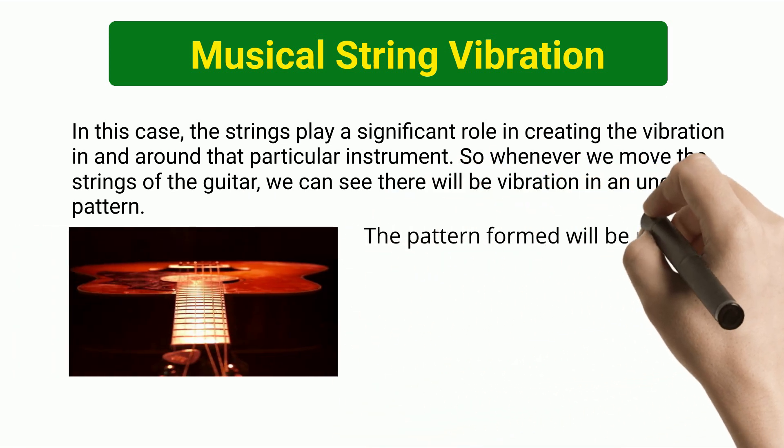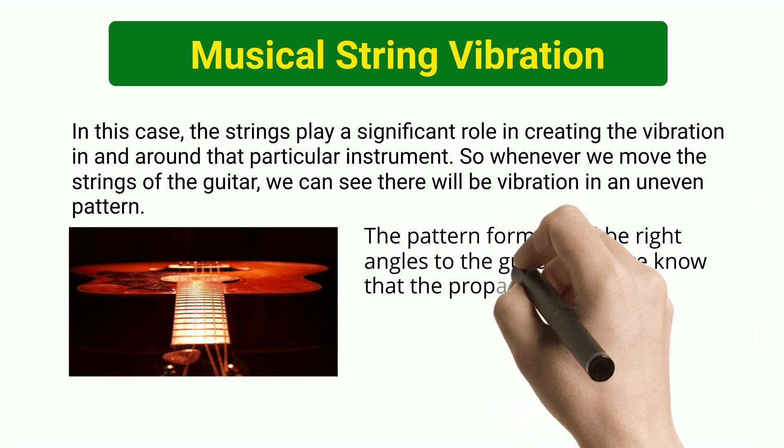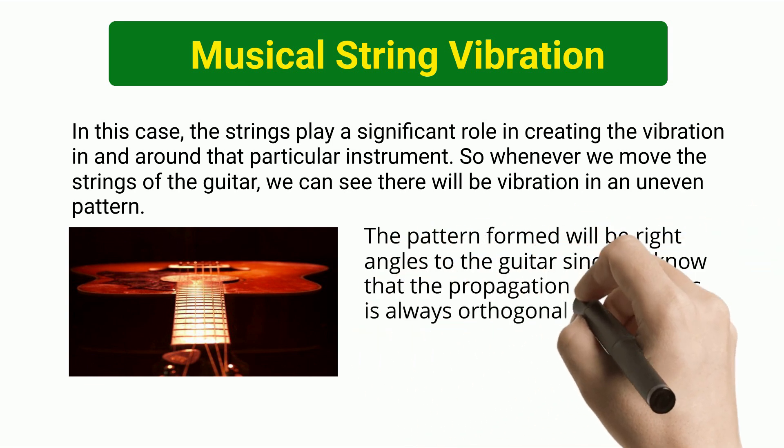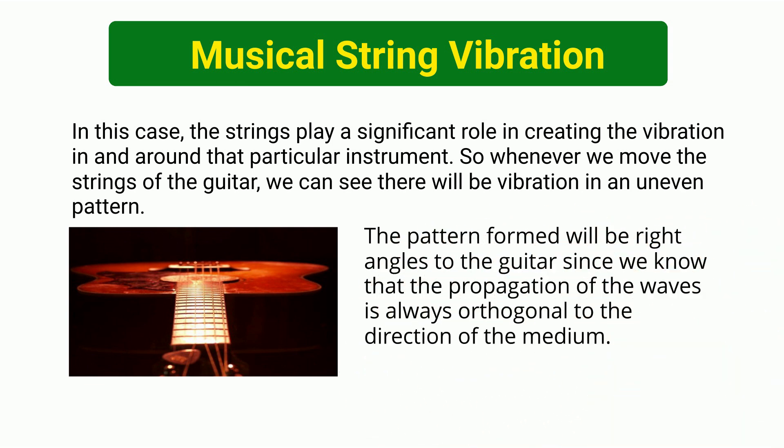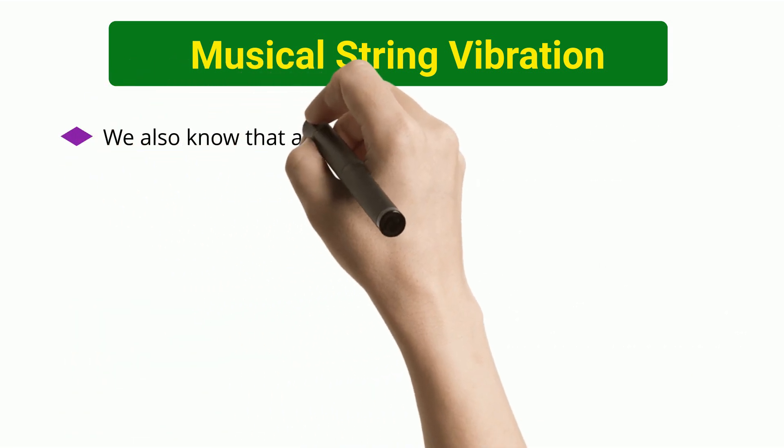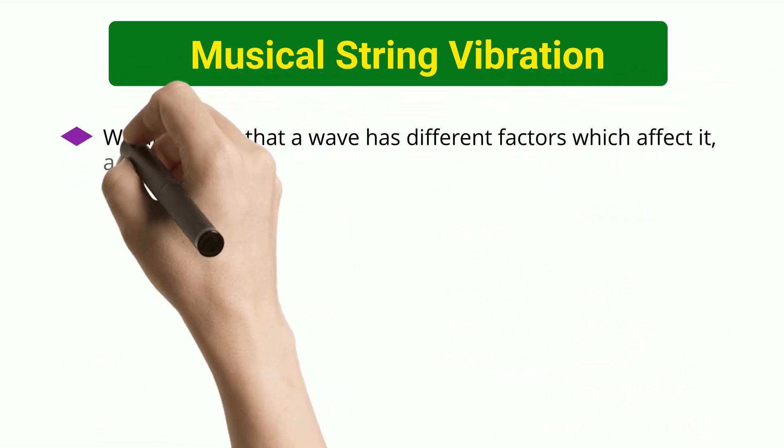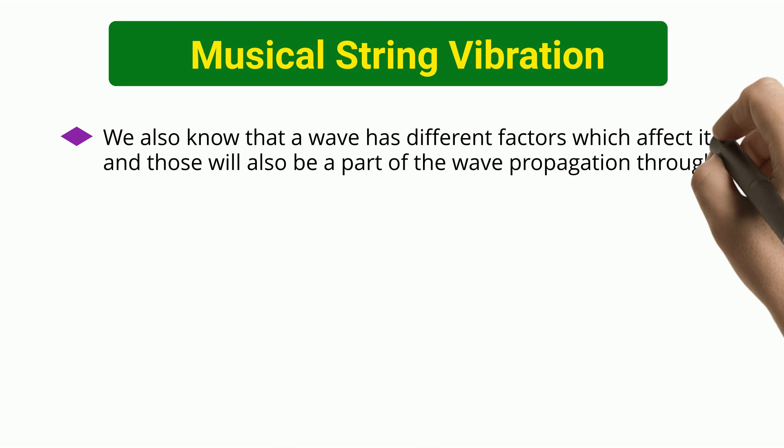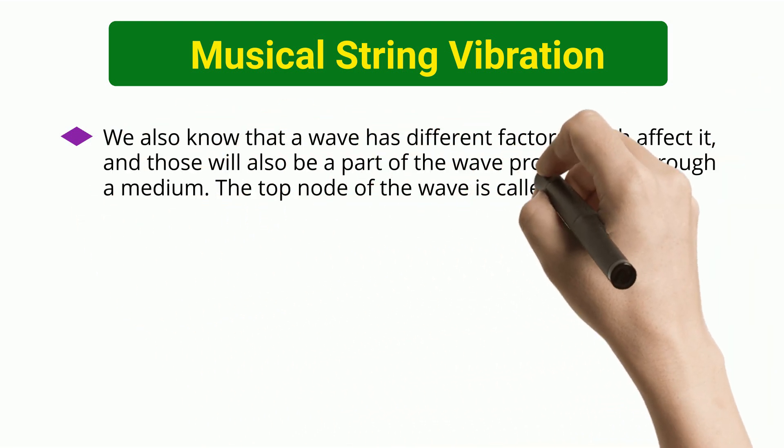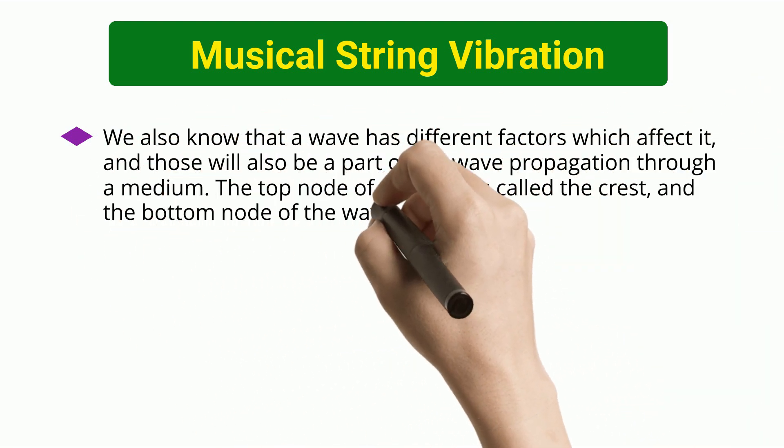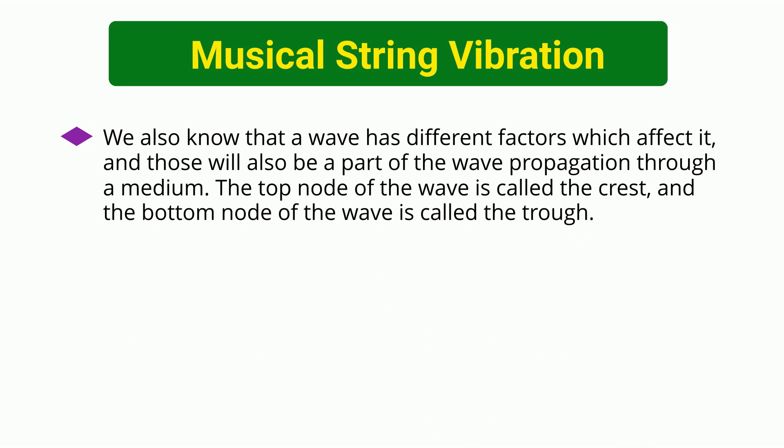The pattern formed will be at right angles to the guitar since we know that the propagation of the waves is always orthogonal to the direction of the medium. We also note that a wave has different factors which affect it and those will also be a part of the wave propagation through a medium. The top node of the wave is called the crest and the bottom node of the wave is called the trough.